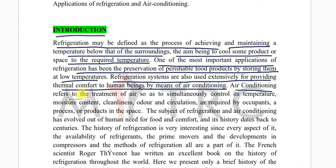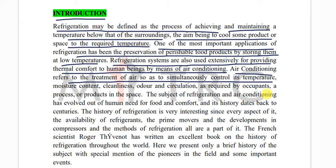Air conditioning refers to the treatment of air so as to simultaneously control its temperature. In an air conditioner, we filter the air and cool it down to the required comfort temperature. Parameters controlled include moisture content, cleanliness, odor and circulation as required by the occupant, the process or product in the space.